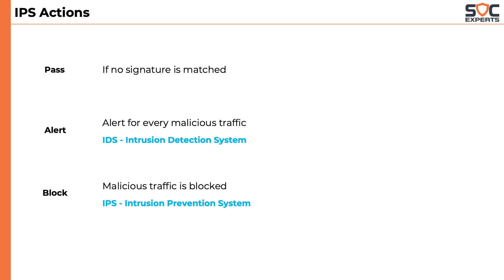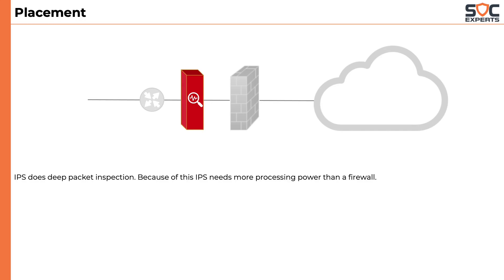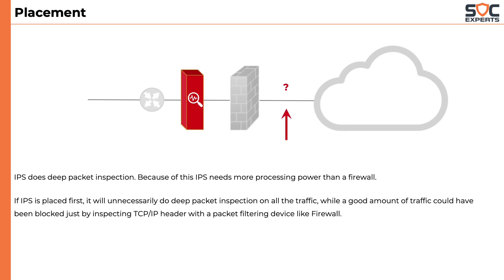IPS is usually placed after the firewall because IPS does deep packet inspection and hence requires more processing power than the firewall. If the IPS is placed before the firewall, it will unnecessarily do deep packet inspection of all the traffic, while a good amount of that traffic could have been blocked just by inspecting the TCP/IP header with a packet filtering device like a firewall. This way of placing the IPS through which every packet passes is called inline placement.